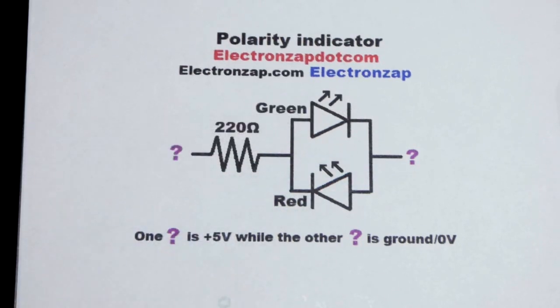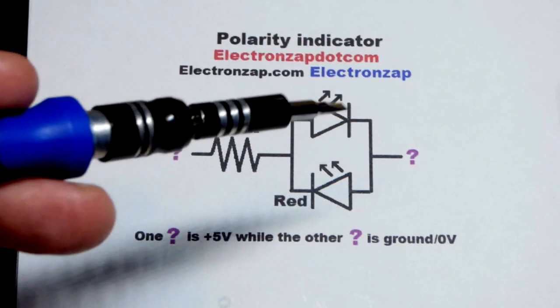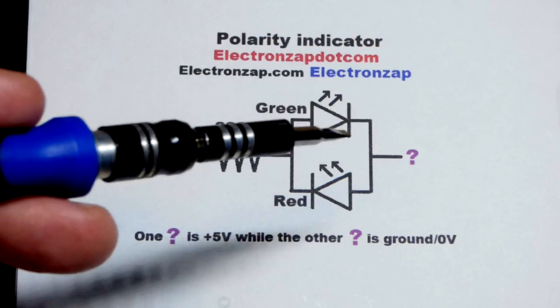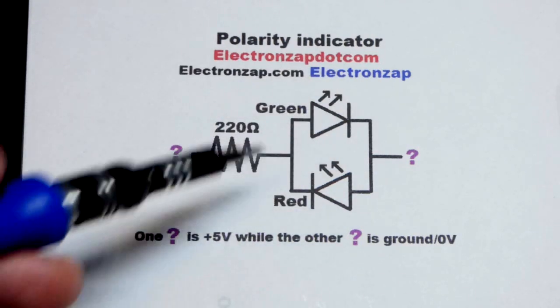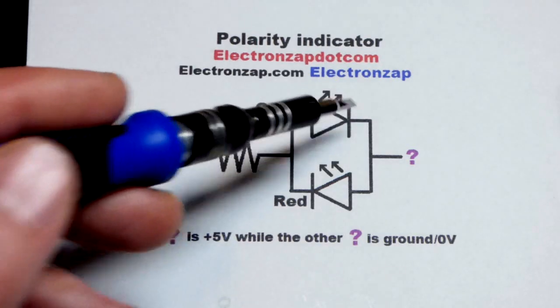This is a diode schematic symbol. LED stands for light emitting diode. So that's the diode schematic symbol right there. The two arrows coming out of it indicate that it's an LED. That side is the anode, that side is the cathode.